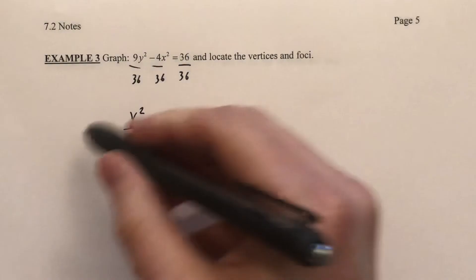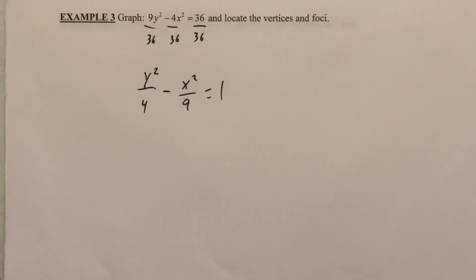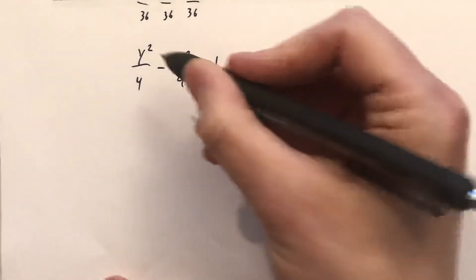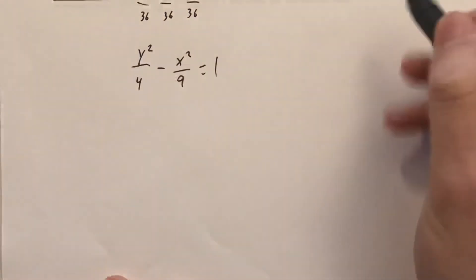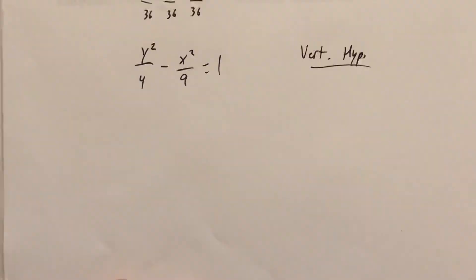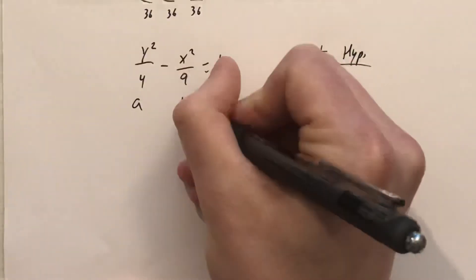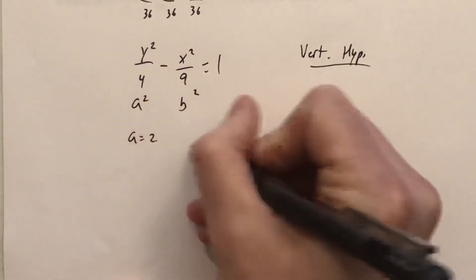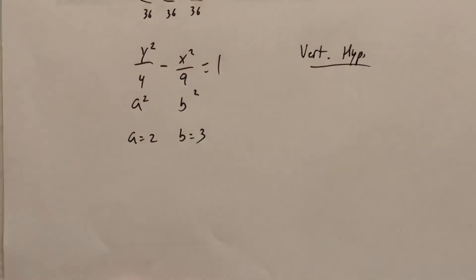And with that step we now have what we were working with before, but we'll go ahead and work our way through the graph again. So first of all, with the y term coming first, we can recognize this as a vertical hyperbola. With our a squared and b squared being there, we're gonna have a is 2 and b is 3.